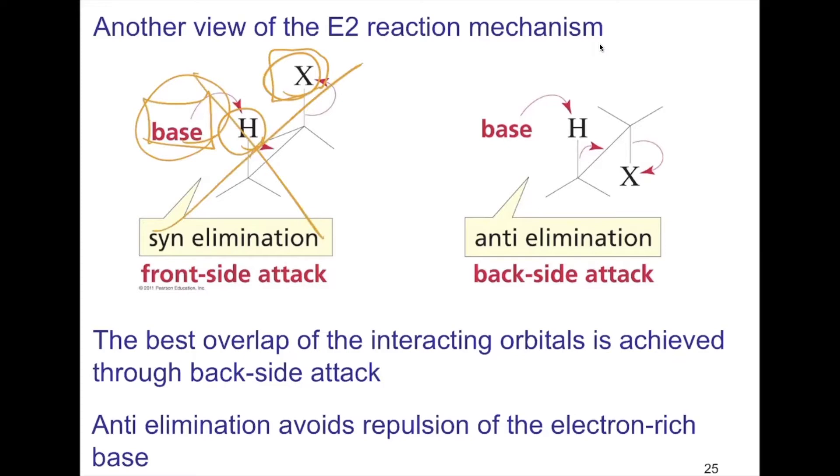However, when they are anti-periplanar, the base approaches from the top and the leaving group leaves from the bottom. This is better. Bottom line: anti-periplanar is required for E2 elimination.